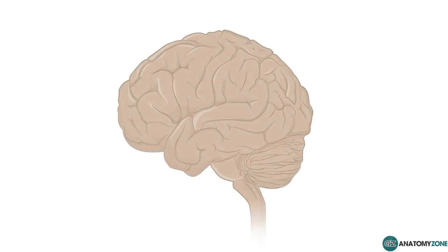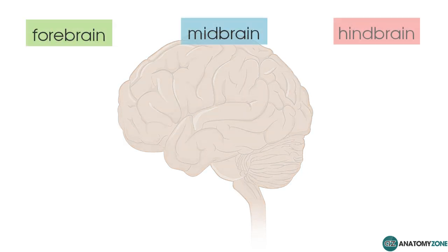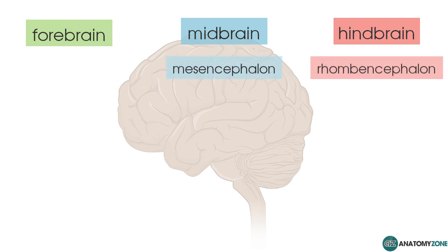Let's take a look at the various divisions of the central nervous system. The CNS consists of the spinal cord and the brain. The brain can be broken down into various components based on how it develops in embryological life: the forebrain, the midbrain, and the hindbrain. These have some confusing names — the hindbrain is called the rhombencephalon, the midbrain is called the mesencephalon, and the forebrain is called the prosencephalon — all from Greek words.